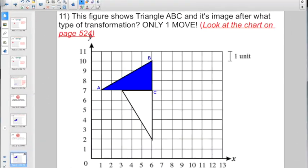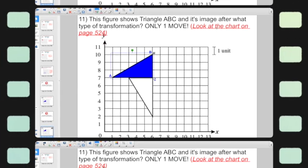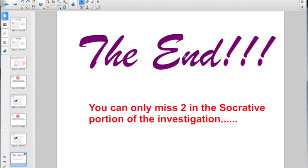All right, welcome back. Take a look at number 11. This figure shows triangle ABC and its image after what type of transformation? If I took triangle ABC, the blue one, one move to get it to fit right here. Again, you might want to look at the chart on page 524. Okay, that is the end.